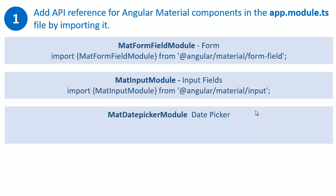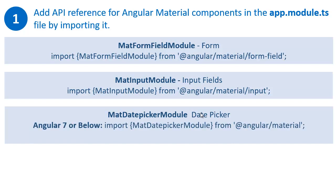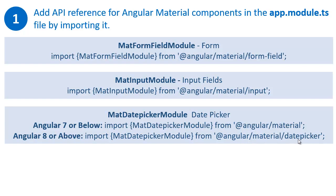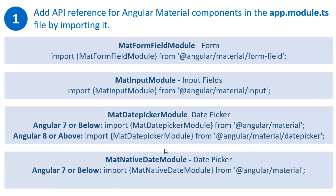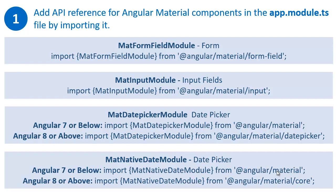The third module, which is particularly required for our date picker, is MatDatepickerModule. If you are using Angular 7 or below it can be imported from the Angular Material library directly, and if you are using Angular 8 or above you can import it from the Angular Material datepicker library. The fourth module is MatNativeDateModule. Similarly, if you are using Angular 7 or below you can import it directly from Angular Material, and if you are using Angular 8 or above this module can be imported from the Angular Material core library.